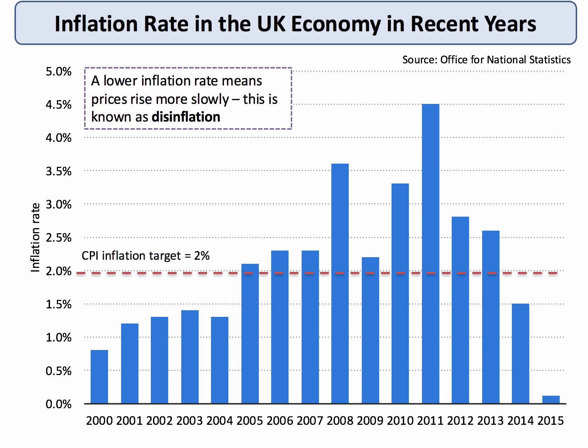I've put into the chart the consumer price inflation target of two percent. You can see that in the last couple of years — 2014 and especially in 2015 — the rate of inflation has been well below target. Indeed, in 2015 prices really barely increased at all on average.